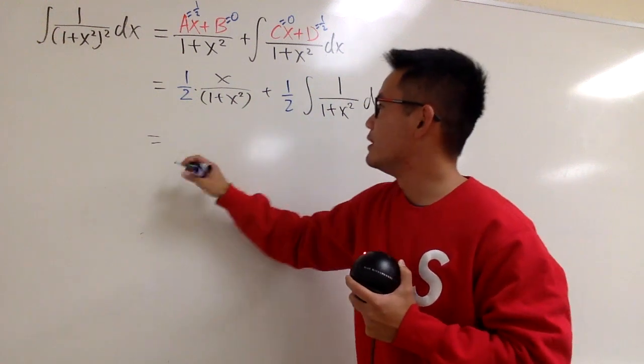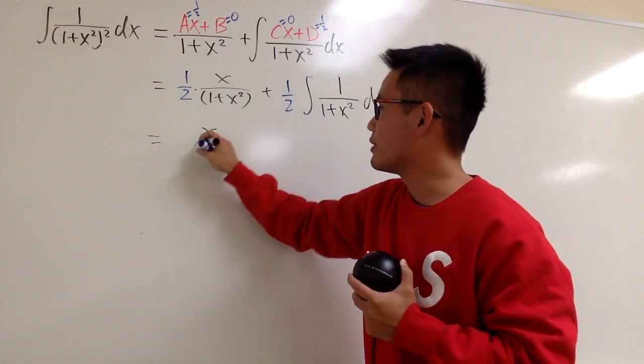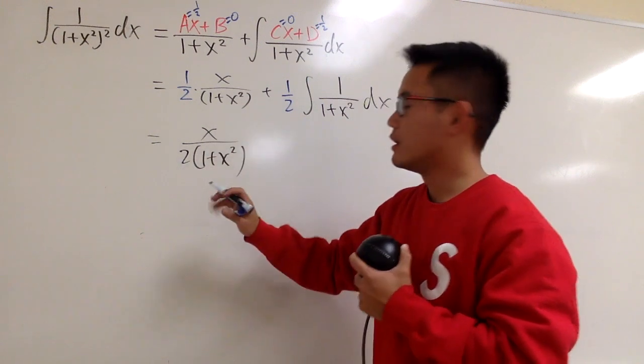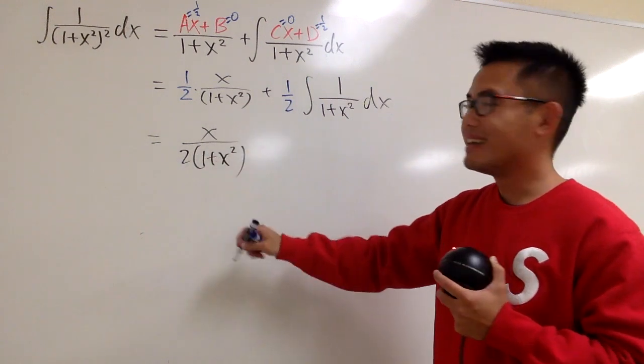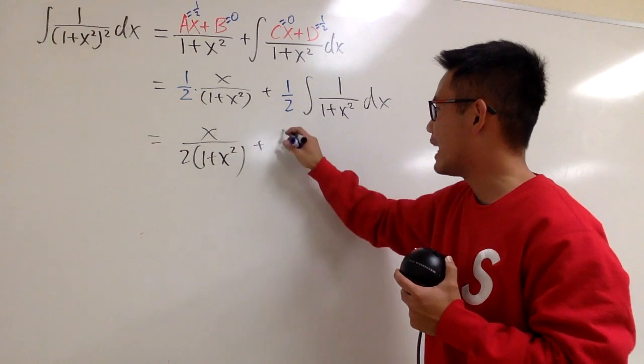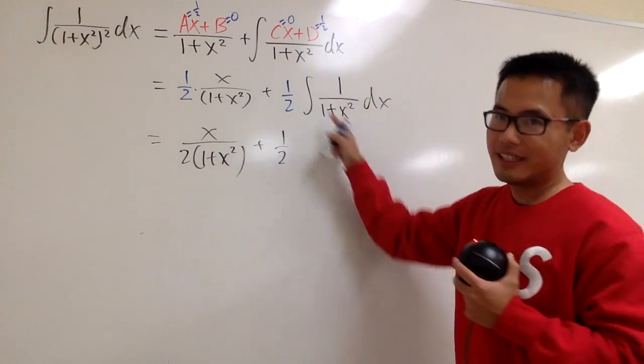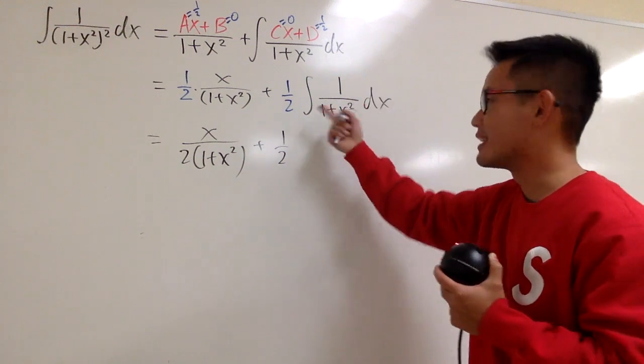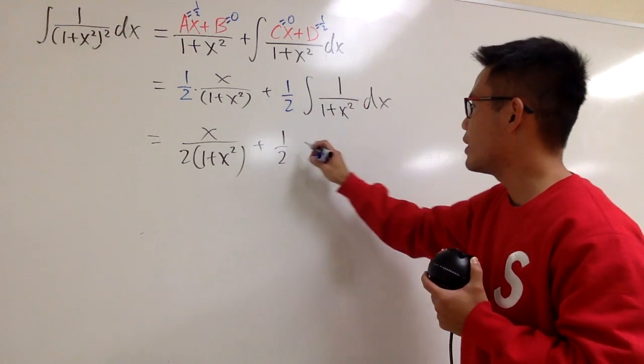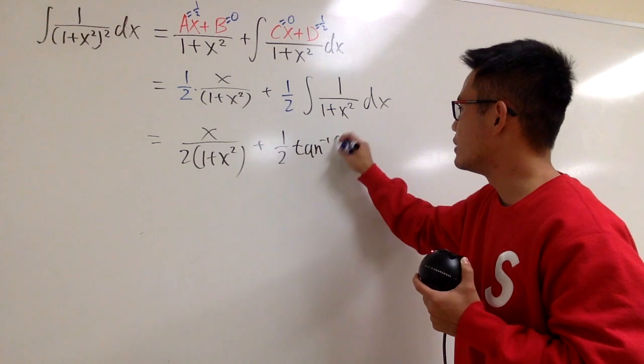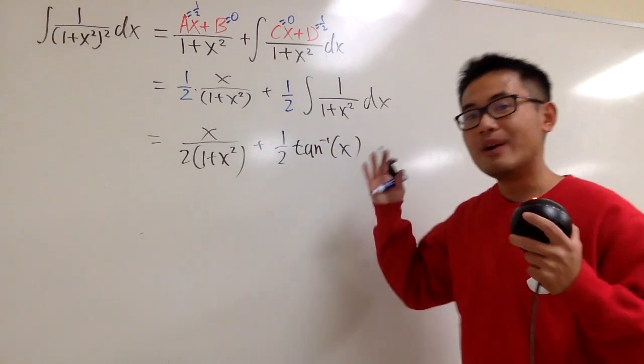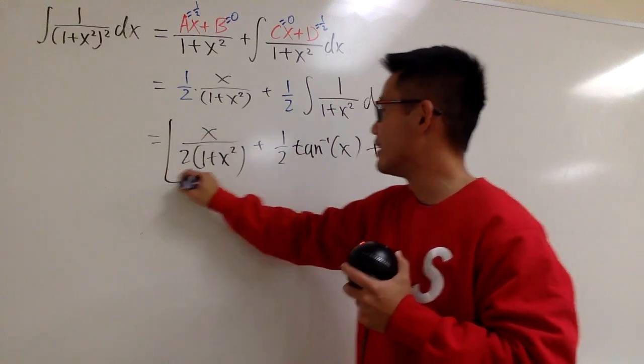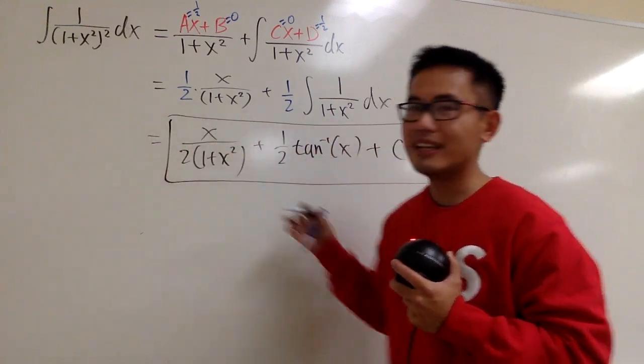And at the end, you know this is going to be x on the top right here over two parentheses, one plus x squared. That's the first part of the answer already. And then we add it with one half. It's still one half. What's this? This is just the inverse tangent. That's the integral of one over one plus x squared. So we have the inverse tangent of x. And we are done just like how we did it with trig sub earlier. So this is for sure the answer as well. So this method is really cool, isn't it?